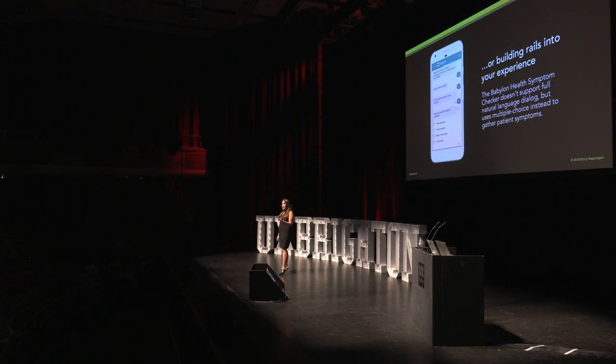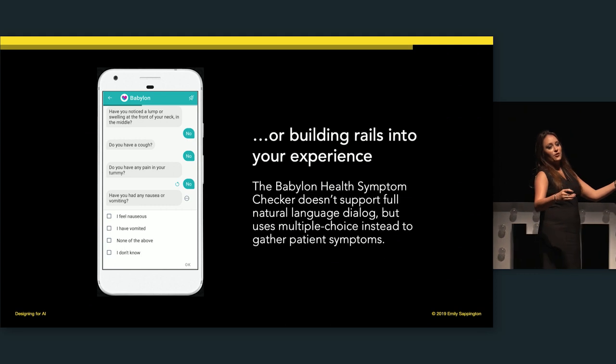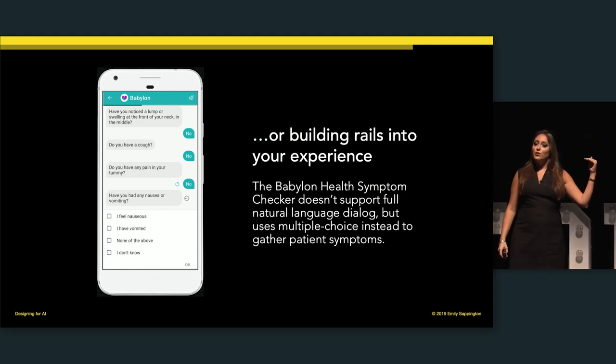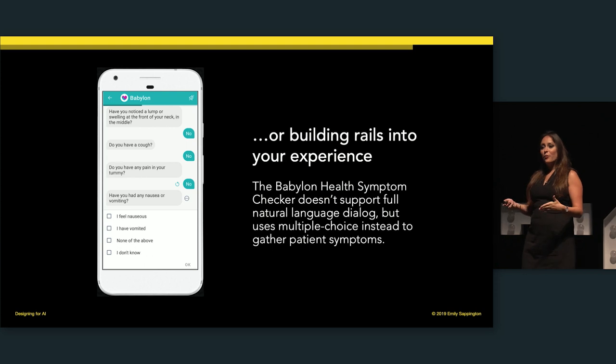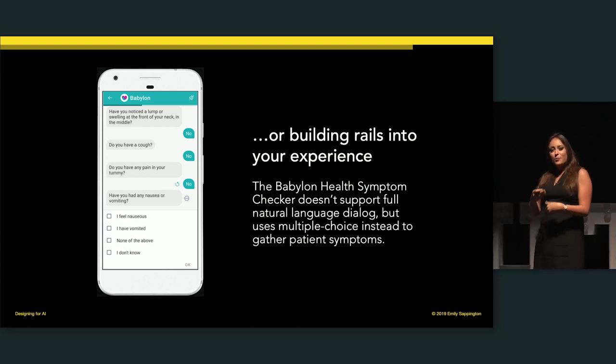It's important for us to be the ones that keep an eye on that bar of expectation. Sometimes it means building rails into your experience. At Babylon, we love natural language — we have some of the best natural language engineering around — but we also don't want to fail and fall on our faces. So at times we're going to guide the conversation, give multiple choice options rather than letting people type anything in, because it helps us have a successful outcome and keeps the conversation moving in a way that we can manage.